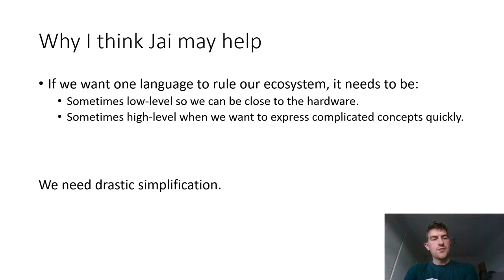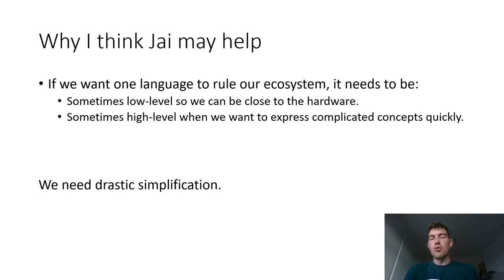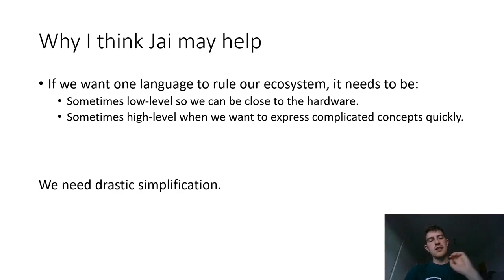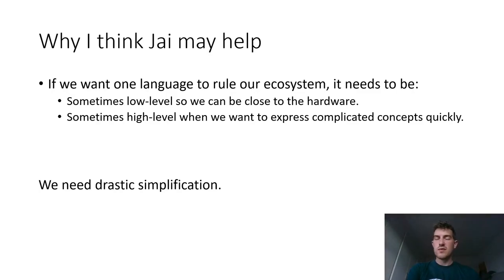Why I think Jai may help. It seems to me that there is a desire in data science, machine learning, AI, and data engineering to use one language to rule the whole ecosystem. Python is used because it appears on the surface that you can do complicated things quickly, and the assumption being that if you want to do things slightly more complicated, it will also be easy in Python — but that's not true. There is something about using high-level concepts which is attractive, but sometimes I want to do low-level things.